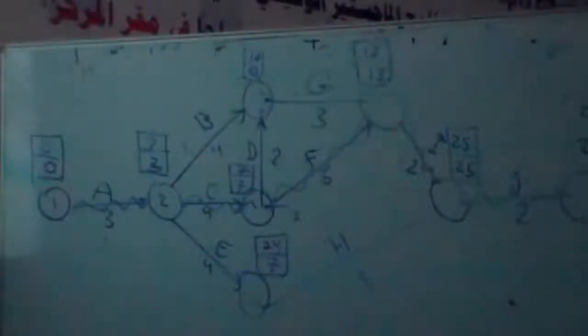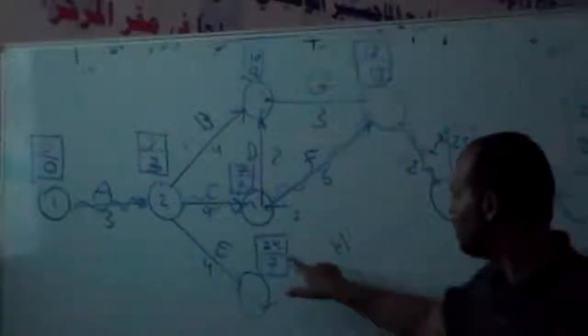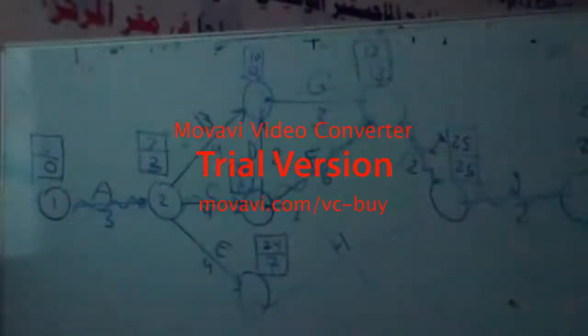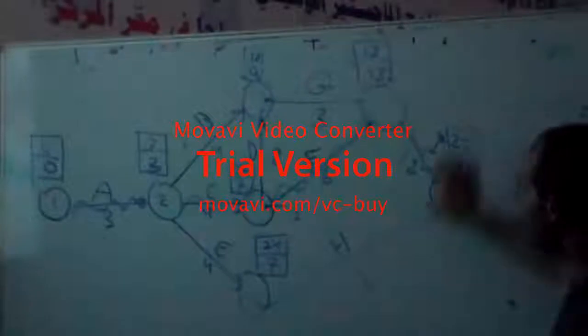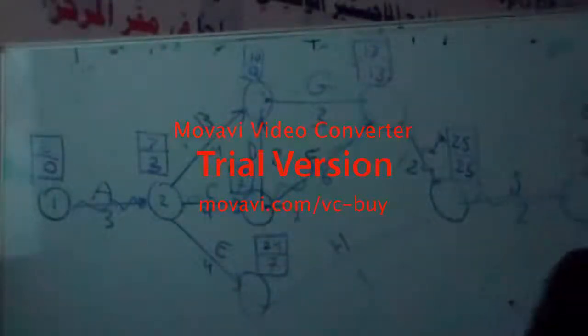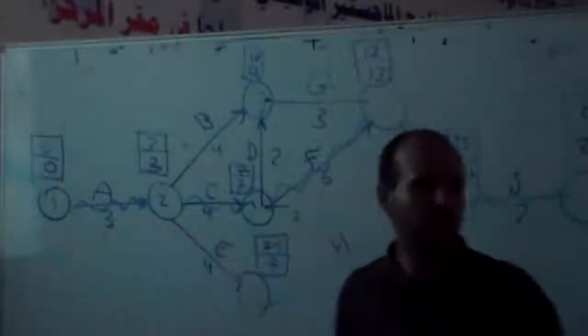Then there is slack. It will be 25 minus 1 minus 24 minus 7, so there is a very big slack. The other one minus this one minus this one minus the small one — that is for each activity, how to calculate the slack. The critical part? The slack or critical part of this problem is 0.